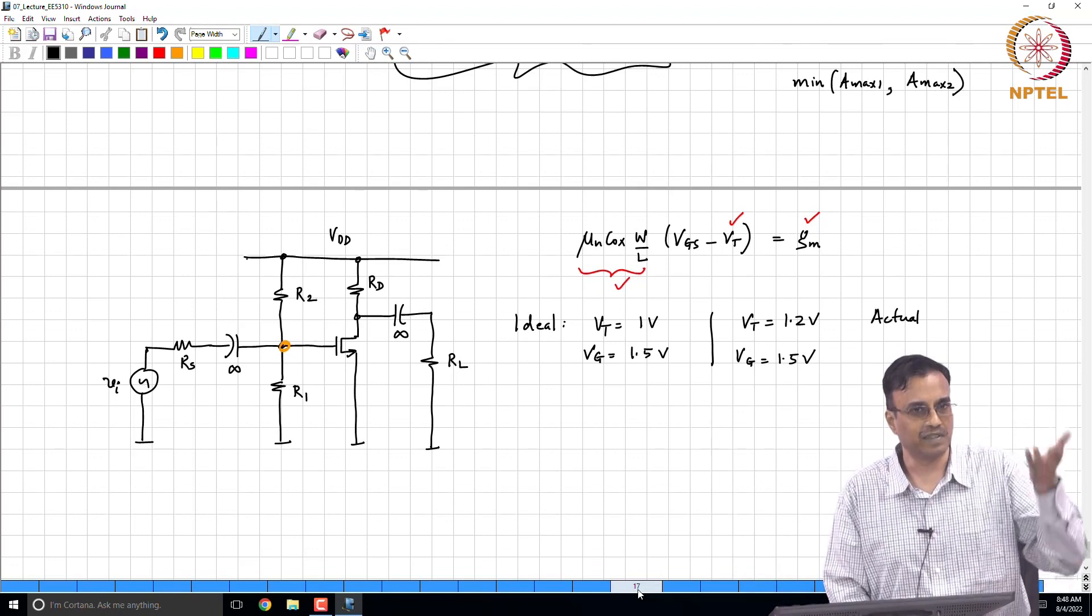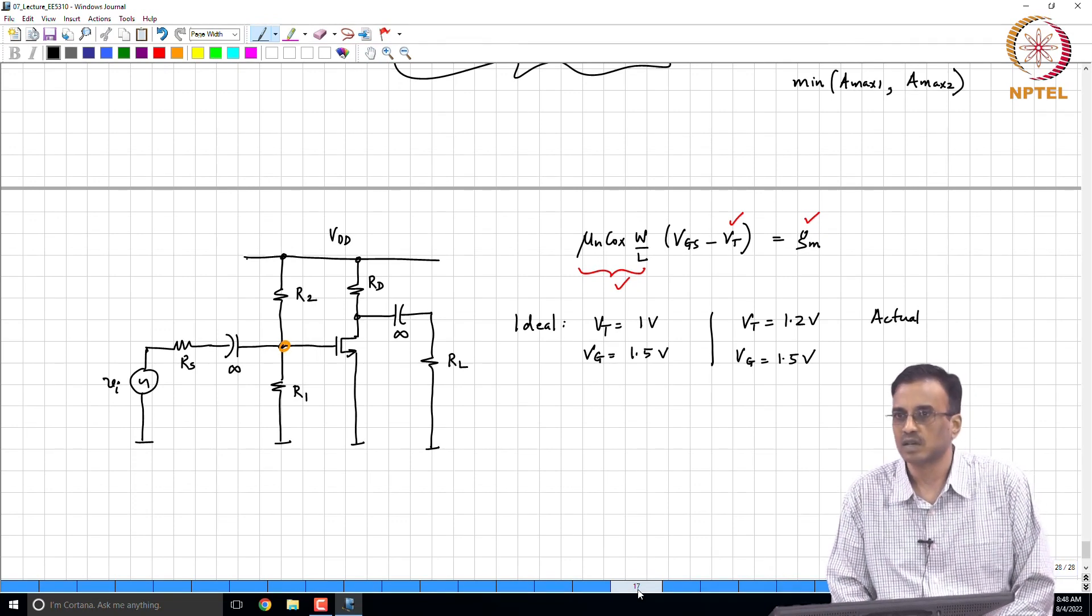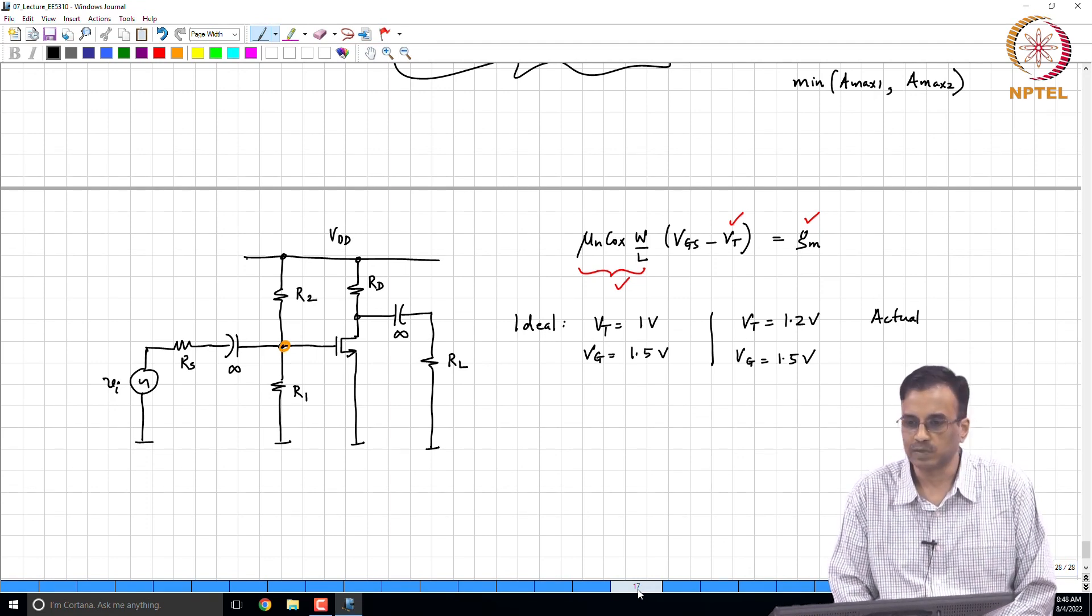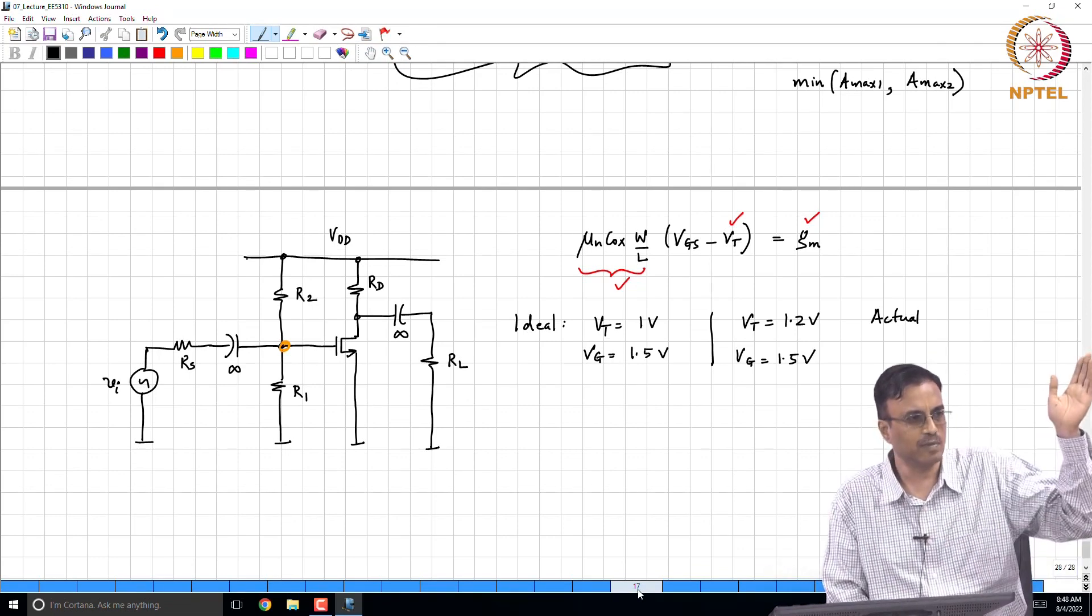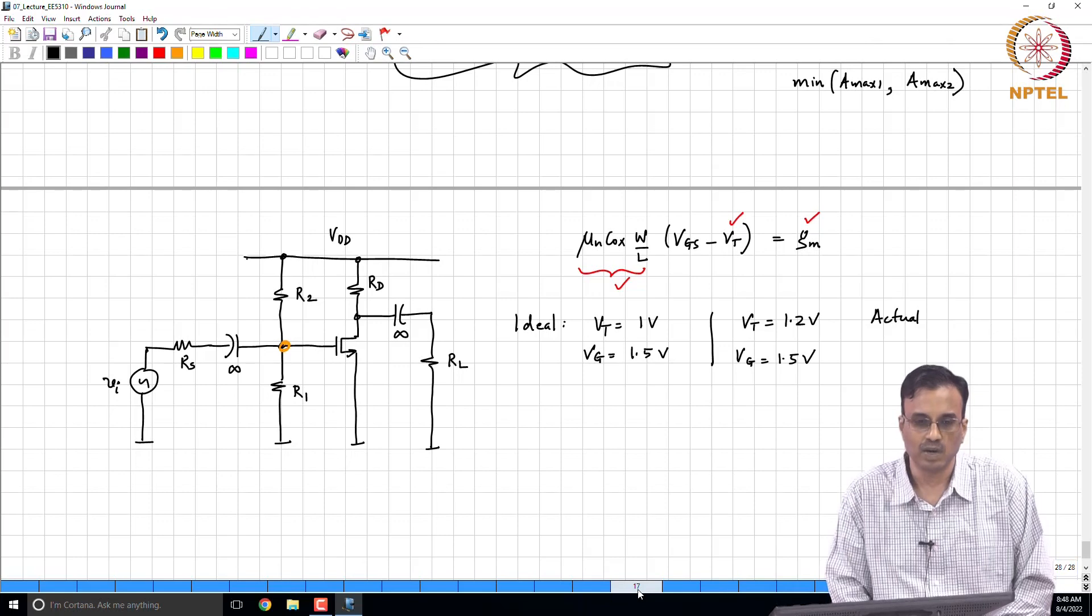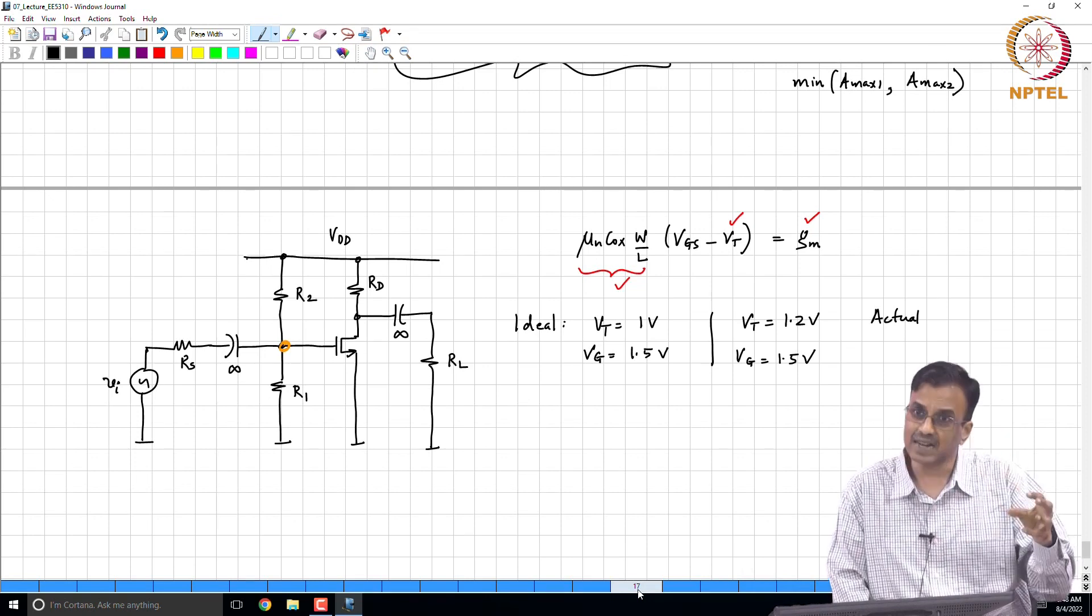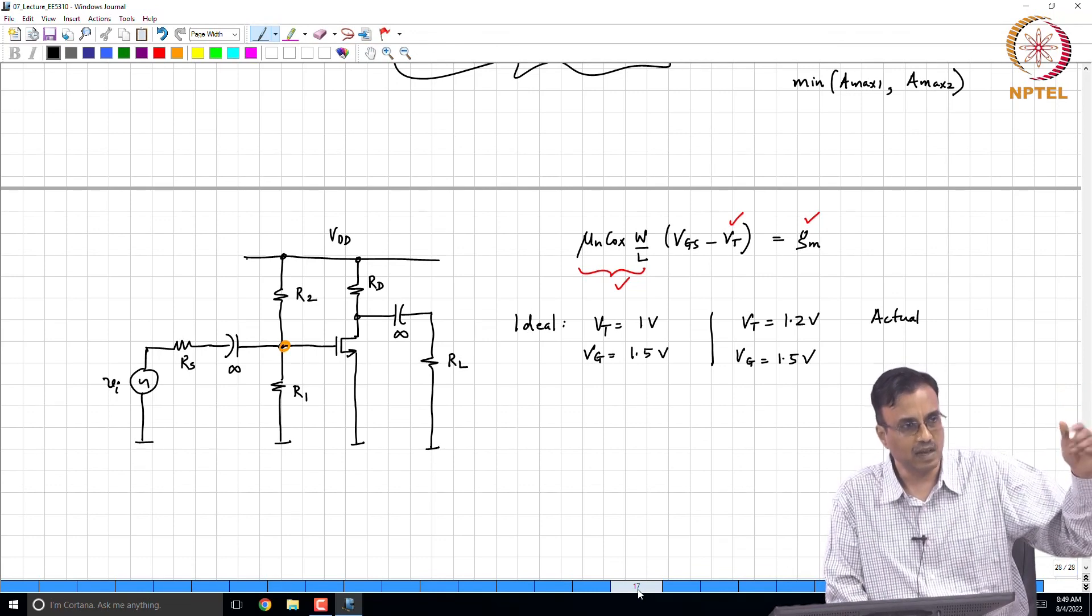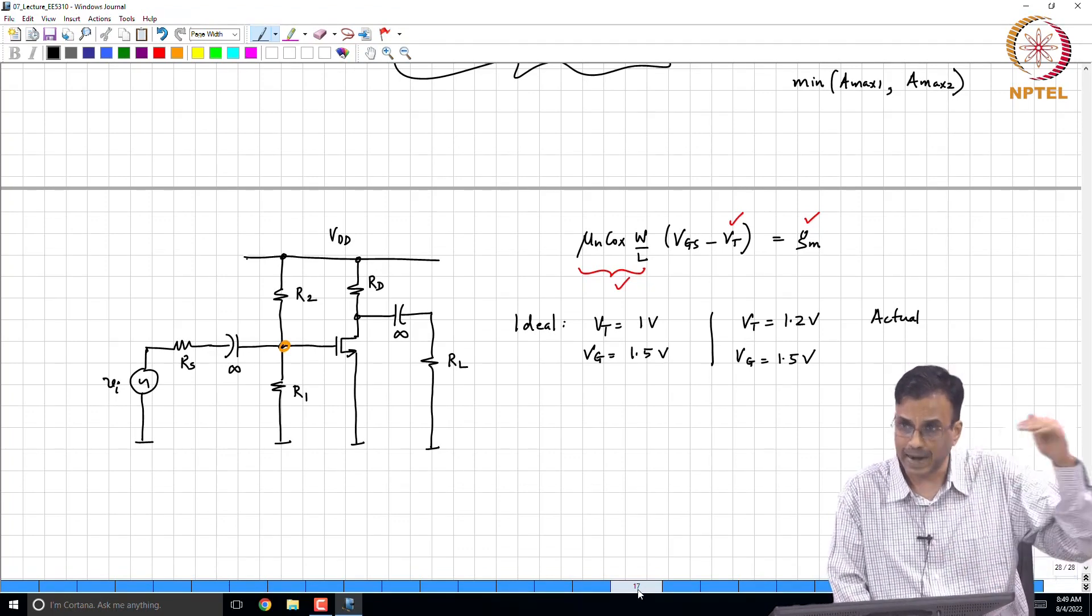If the supply voltage changes by 10 percent, again a common thing in all electronics is that all your circuits must work - the circuits that you design must work with plus minus 10 percent change in the supply. And please do not confuse this with the variation in the battery voltage. The battery voltage will change from 4 volts to 2.7. That is a much larger change. There are already circuits which make sure that in spite of the battery voltage changing, the voltage going to all your ICs on your cell phone are all very well controlled.